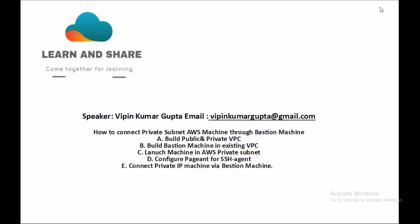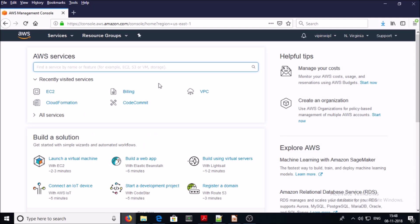Hey, good morning everyone. My name is Vipin Kumar and in today's demonstration we are trying to access a machine hosted in a private network via a bastion machine. Since this machine doesn't have any public IP address, we require a proxy server to access the AWS private network. We are going to build a public and private network, build a bastion machine in an existing VPC, launch a machine in the AWS private network, configure Pageant for SSH agent, and finally connect our private IP machine via the bastion machine.